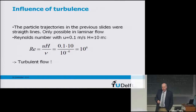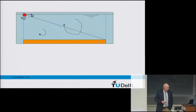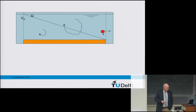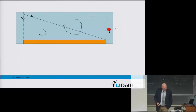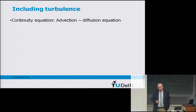The problem is that in reality the flow is not laminar but turbulent. That means that if you have a particle normally settling along a straight trajectory in laminar flow, due to turbulence you can have the stirring up of eddies, which transports the particle to the overflow section. That's something we like to model.